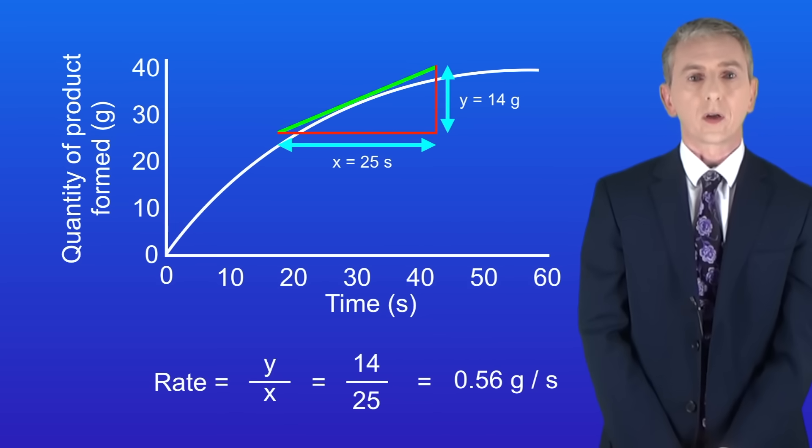To calculate the rate of reaction we now divide y by x. So 14 divided by 25 gives us a rate of 0.56 grams per second.